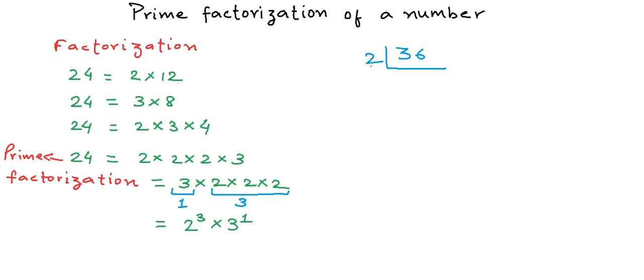We write down the divisor along the vertical line and the quotient along the horizontal line. So if we divide 36 by 2, the quotient is 18. Anytime we pick up the divisor and the quotient, multiplying them gives us the actual number. So 36 is 2 into 18.